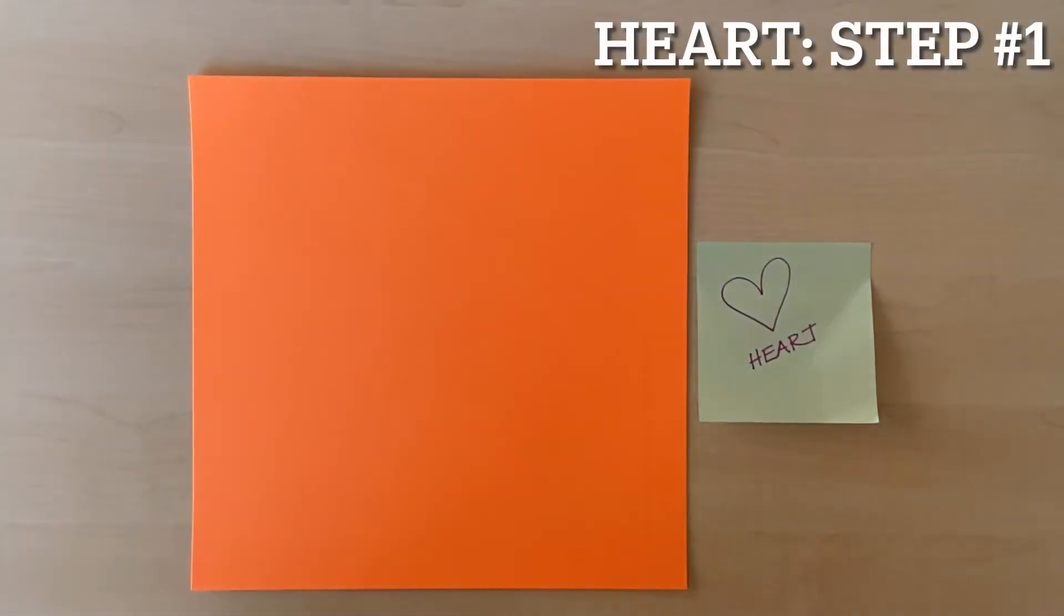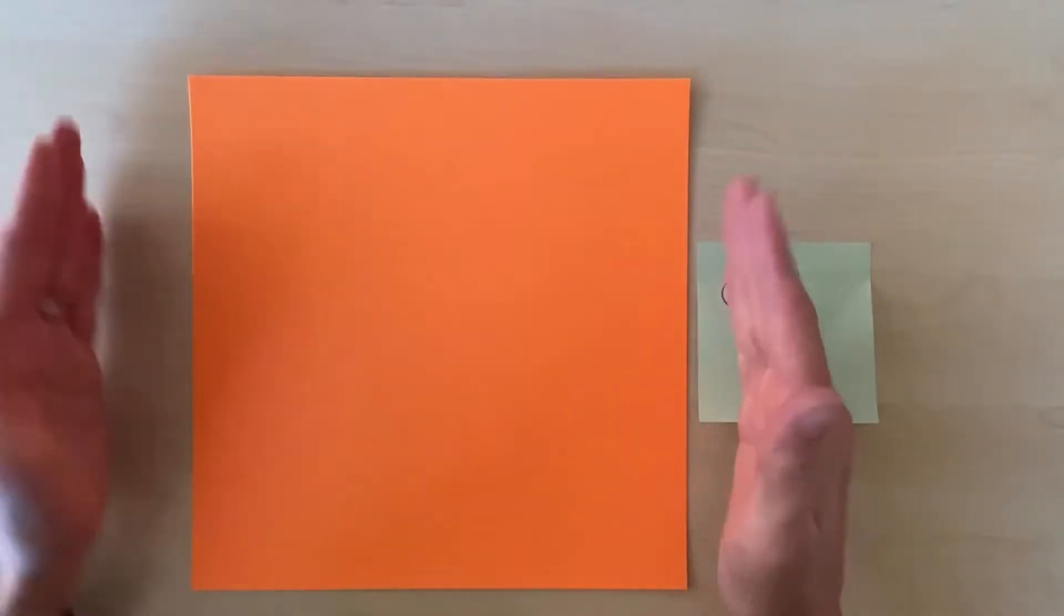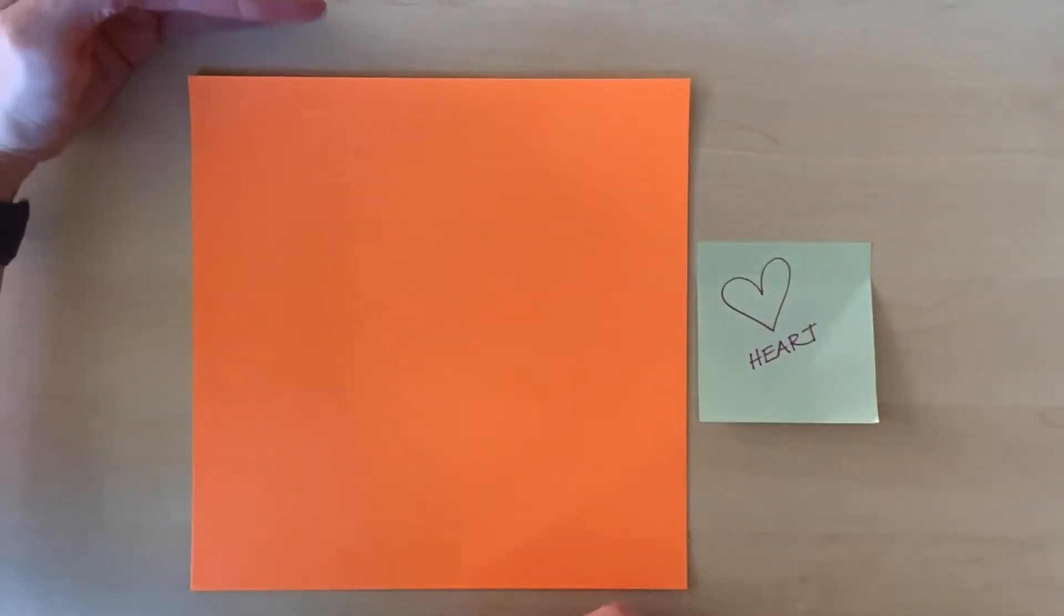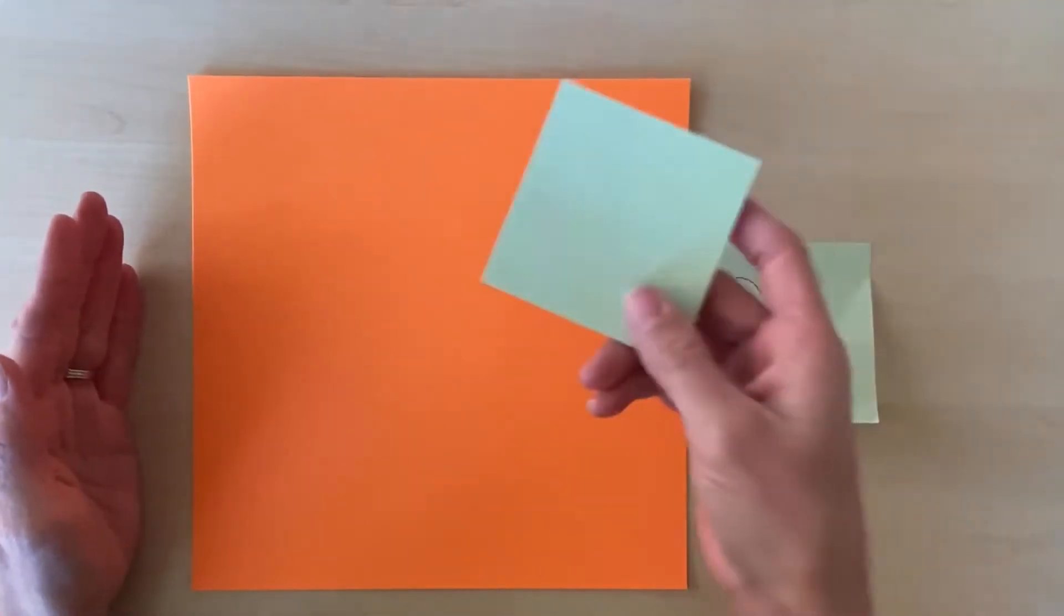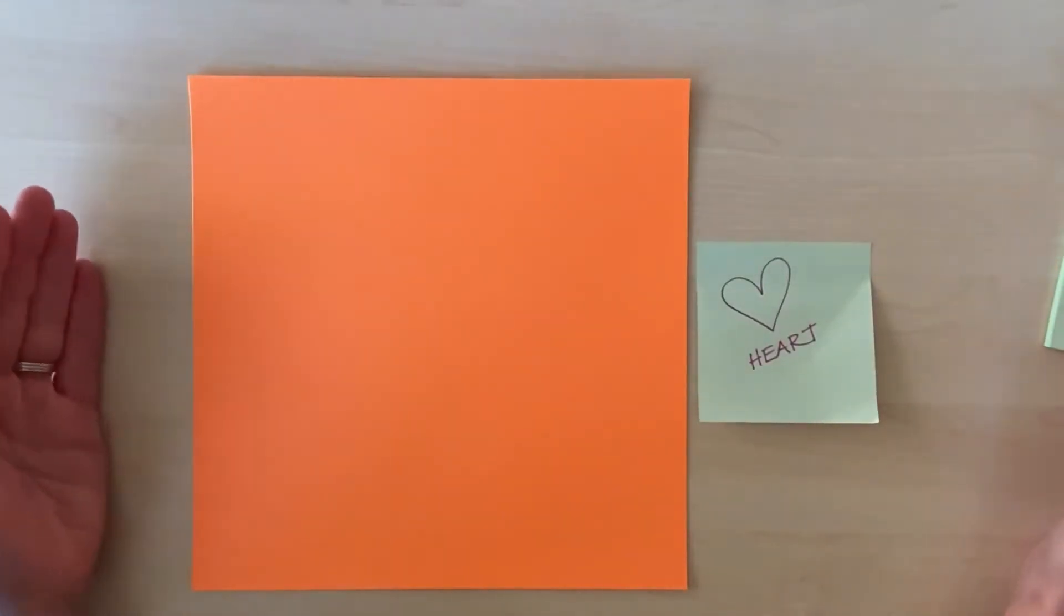Folding an origami heart. First we're going to start with a square piece of paper. Mine is eight and a half by eight and a half. You can also use post-its because it comes as a square.